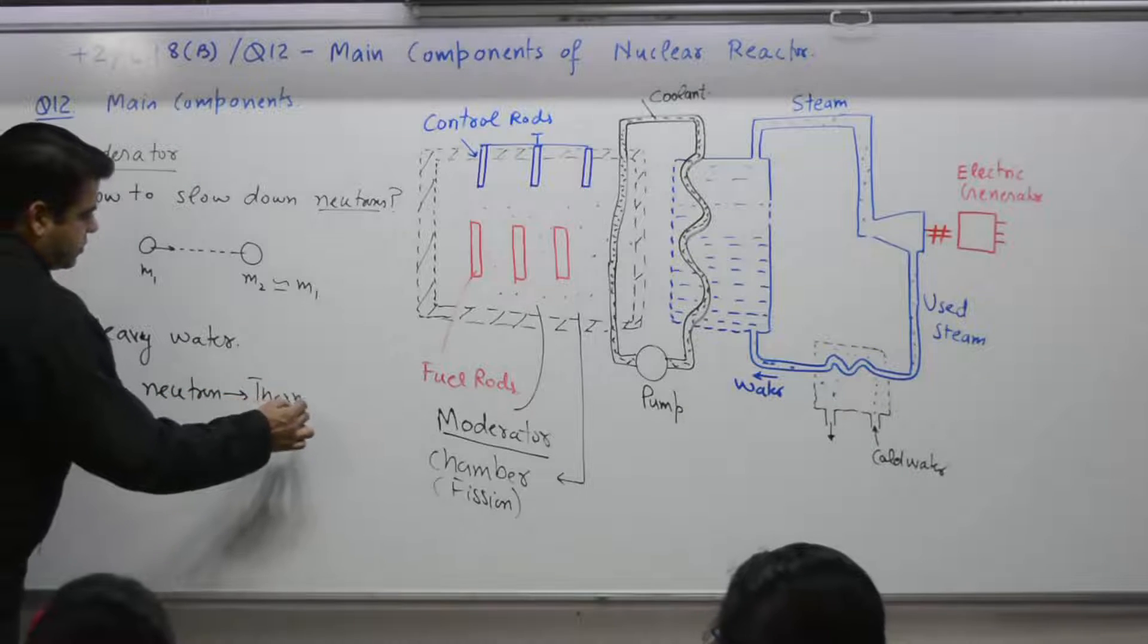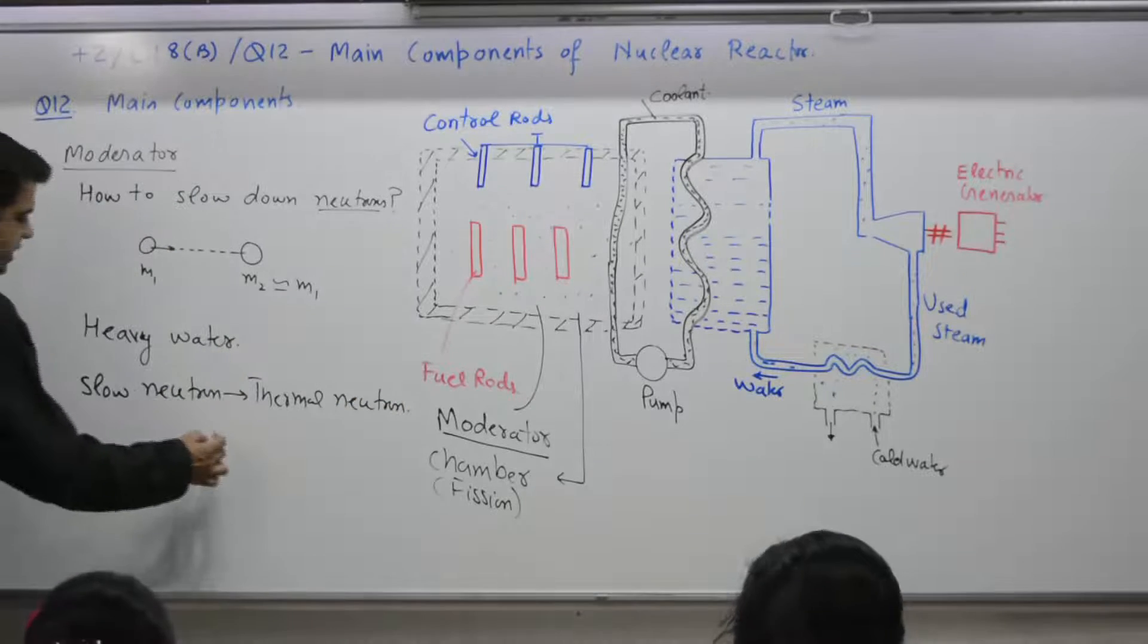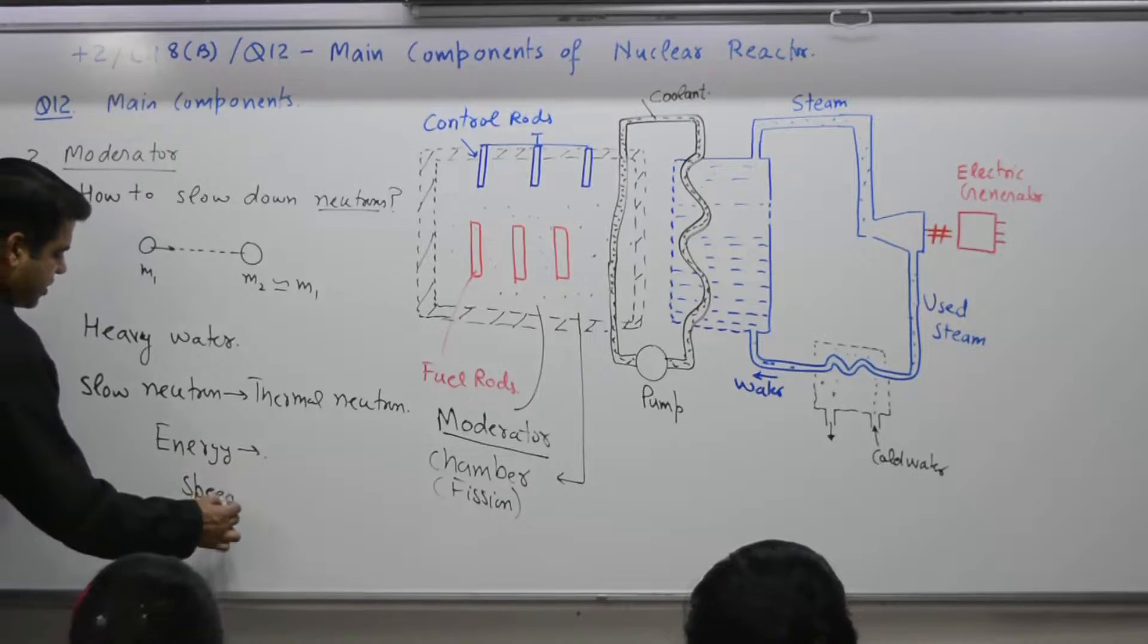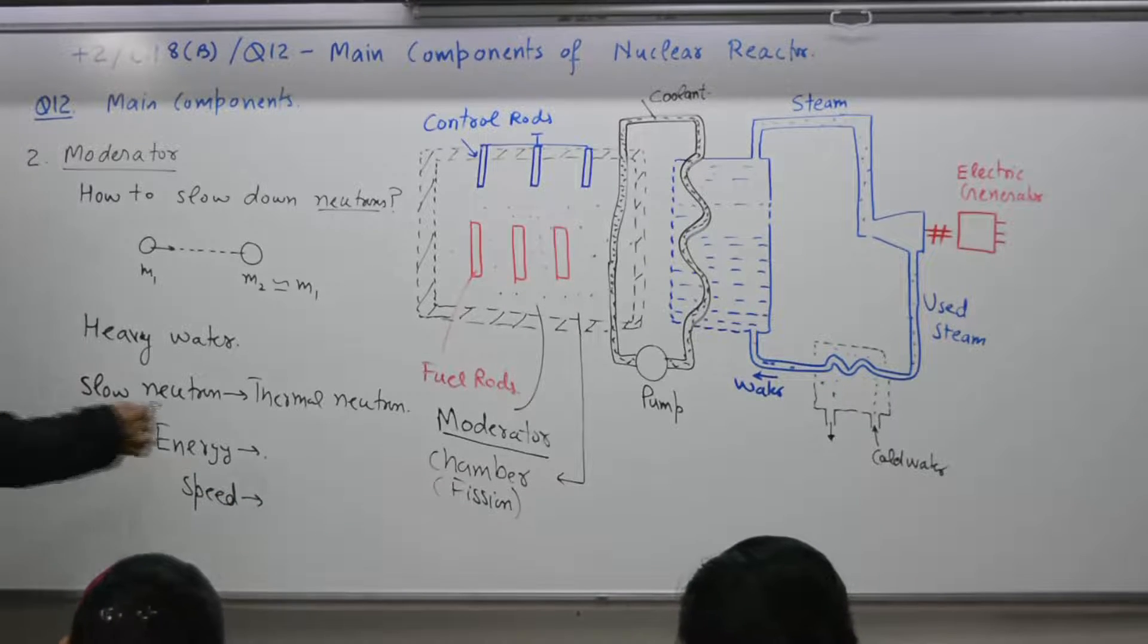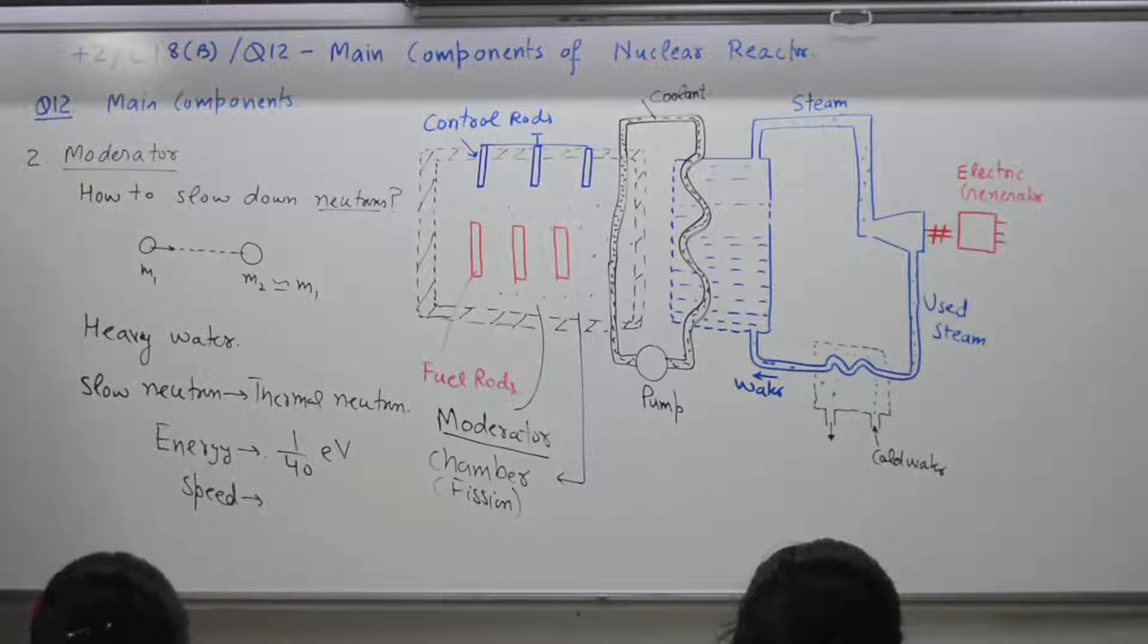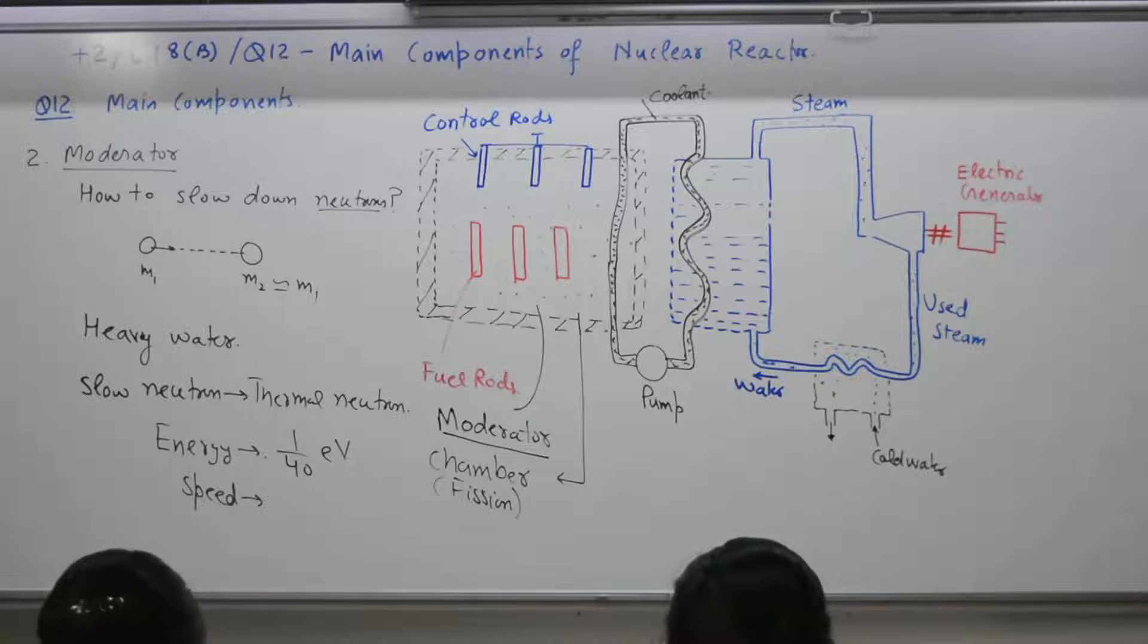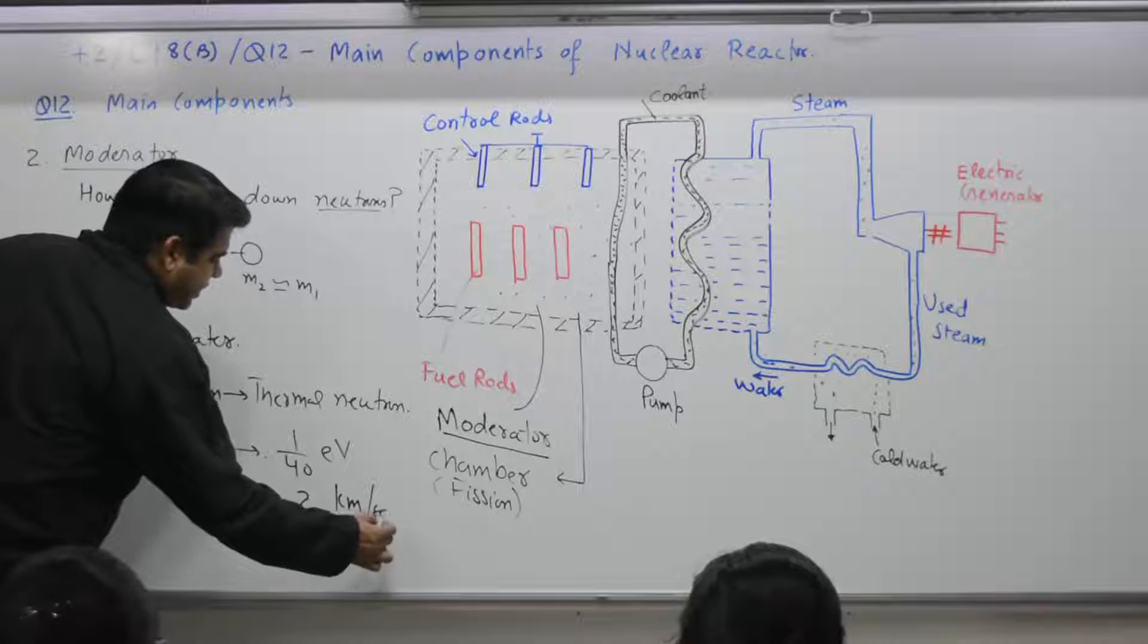Slow neutrons are also termed as thermal neutrons. What is energy? Referred to the previous article. They have energy of what order and speed of what order. Yes. Fraction of electron volt. Yes. Fraction of electron volt. That is energy is 1 by 40 electron volt. Yes. Article number 30. Energy is first line. Energy is 1 by 40 electron volt and speed. Say 2, say 2 kilometer per second. Approximately.